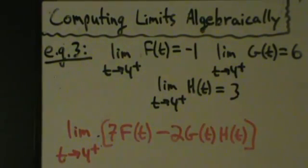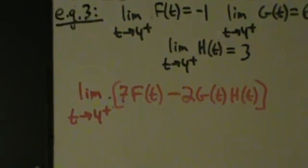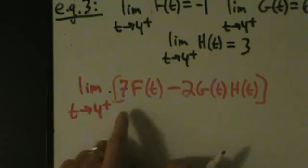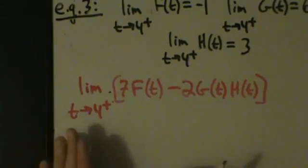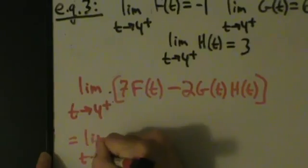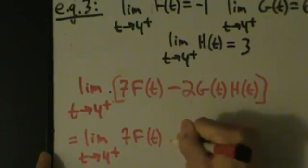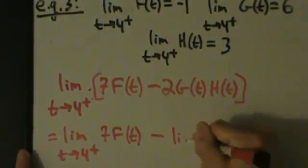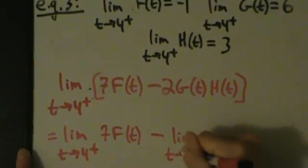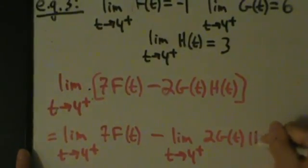So what we want to figure out is this big ol' mess here. Limit as t approaches 4 from the right of the quantity 7F of t minus 2G of t H of t. So we'll split this up and go through it in a lot of detail. So first, what we have is limit of this minus this, so we can split this up as a difference of two limits. So this is limit as t approaches 4 from the right of 7F of t minus the limit as t approaches 4 from the right of 2G of t H of t.